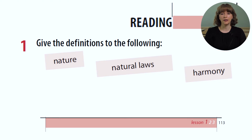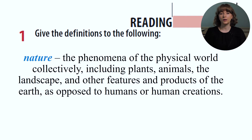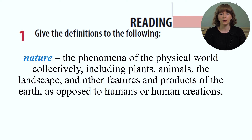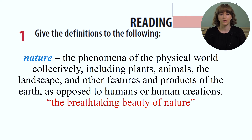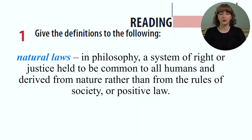In the next activity you are to give the definitions to the following words. My advice is whether you use a dictionary, be sure that this is a reliable source of information. Now let's see what are the definitions given by the worldwide known dictionaries. Nature is the phenomena of the physical world collectively, including plants, animals, the landscape and other features and products of the earth, as opposed to humans or human creations. Example: the breathtaking beauty of nature.